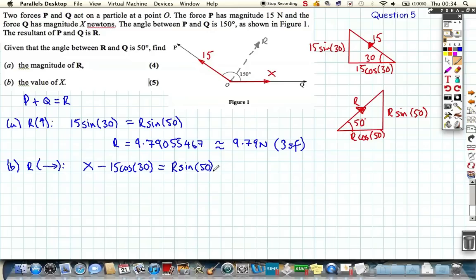So rearranging, we know what R is, so we can say X is this plus this, because we're going to move it to the other side. It's very important, I'm going to be using the answer button for my calculator. So it's going to be answer button times sine 50 plus 15 times cos 30. Do that all on my calculator. I can get 19.28362829. I can round this to 19.3 Newtons to three significant figures.